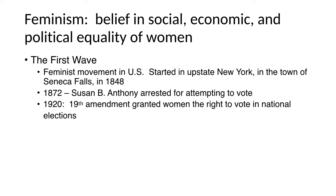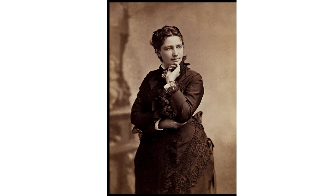This person is Victoria Woodhull. In the mid-19th century she became wealthy as a spiritualist, helping people commune with the afterlife. Then she and her sister Tennessee Claflin became the first women to own a brokerage on Wall Street, and she purchased a newspaper. She ran for president in 1872 — far ahead of the curve. She didn't even have the right to vote, let alone run for president, and she wasn't even old enough: the Constitution requires a president to be 35, and she was only 34.